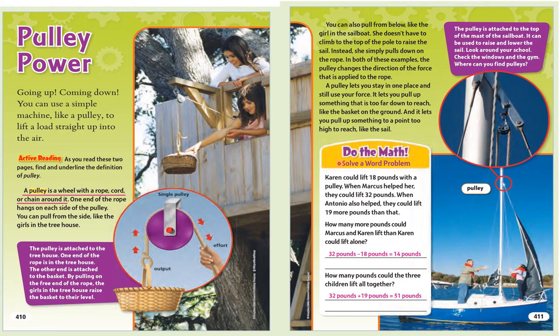Do the math — solve a word problem. Karen could lift 18 pounds with a pulley. When Marcus helped her, they could lift 32 pounds. When Antonio also helped, they could lift 19 more pounds than that. How many more pounds could Marcus and Karen lift than Karen could lift alone? How many pounds could the three children lift altogether?